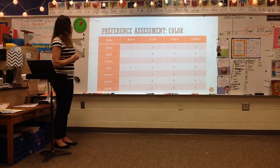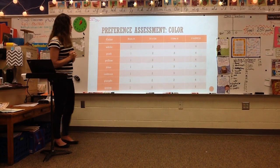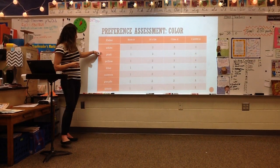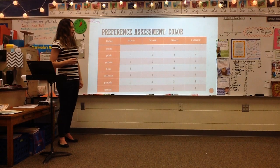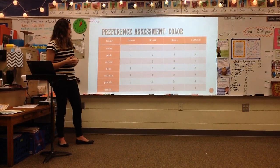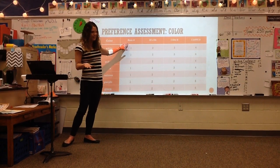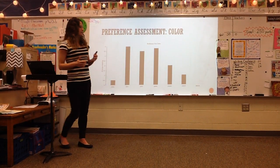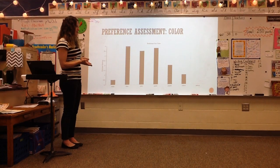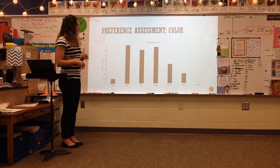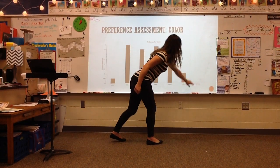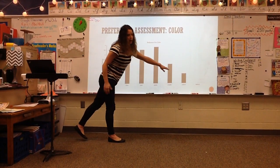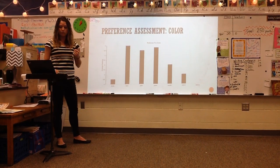Before starting, I will do a preference assessment of color with the participants using a survey with physical papers representing the colors of white, pink, yellow, blue, salmon, purple, and green. I'm going to ask the students to rate the colors on a Likert scale from 1 to 4, with 1 meaning they hate that color and 4 meaning they love that color. I'm going to analyze the results and choose three least preferred colors — salmon, white, and yellow — as the least preferred colors to prevent any color bias throughout the study.